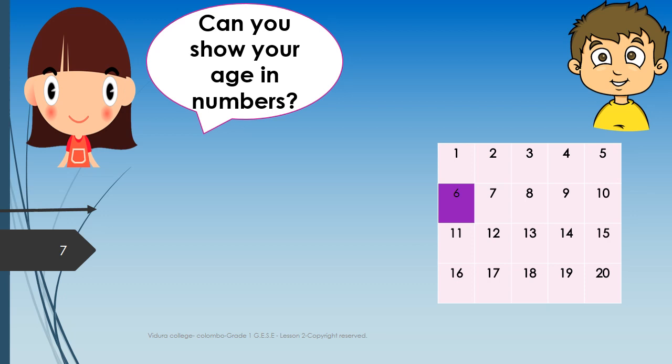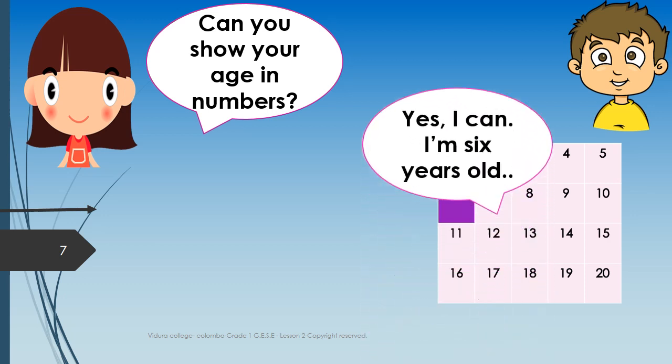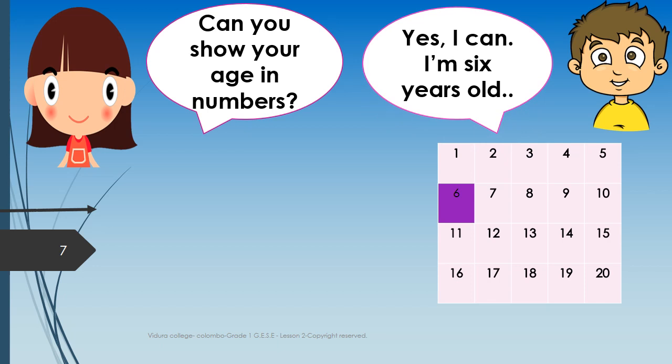Can you show your age in numbers? Yes, I can. I am six years old. Very well. Here is one way that we can use numbers in speaking — your age. You should be aware about your age. As little children, you might not remember that. But hereafter, keep that in your mind. You should be able to remember your age. Show your age using fingers. Show that in a number chart like this.